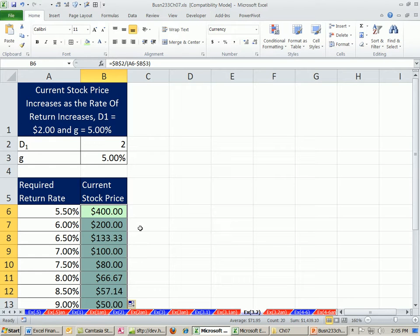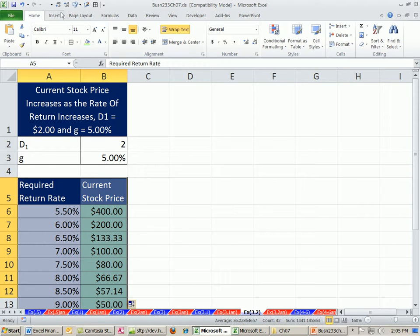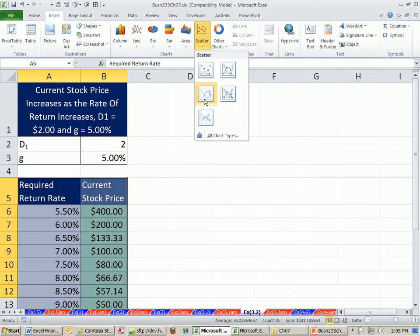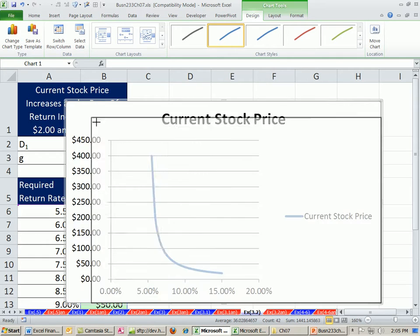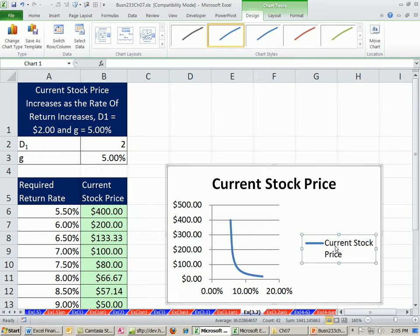I'm going to highlight the whole table, Control-Asterisk. I'm going to go up to Insert, Scatter. I'm going to select this one. Point to the edge. Click and drag. Click there and delete. Click there.